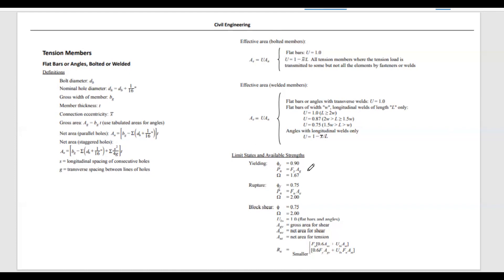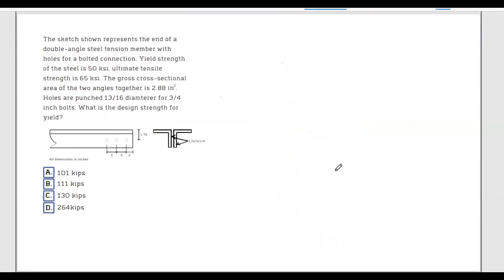Let's work on an example. The sketch shown represents the end of a double-angle steel tension member with holes for a bolted connection. Yield strength of the steel is 50 KSI, ultimate tensile strength is 65 KSI, and the gross cross-sectional area of the two angles together is 2.88 inches squared.